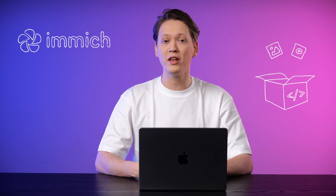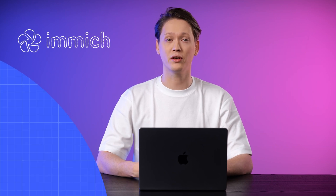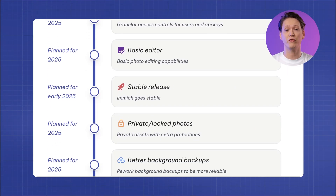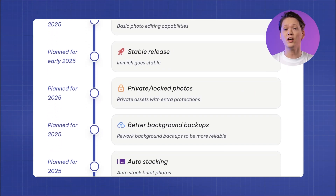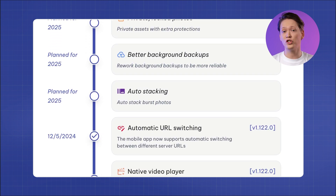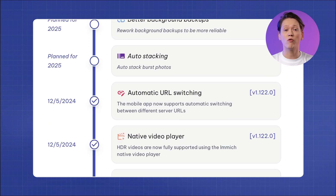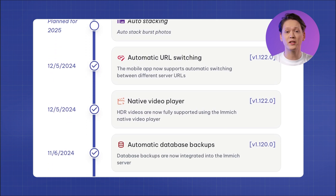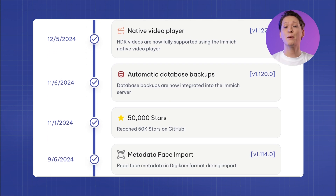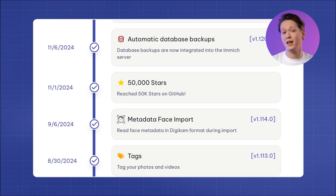Image is an open-source self-hosted photo and video backup solution. It has a wide range of features including facial recognition, geotagging, raw file support, automatic backups and many many more.